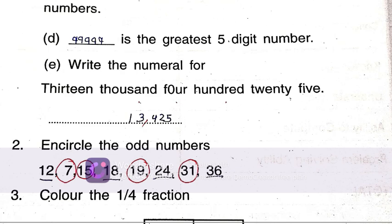99999 is the greatest 5-digit number. You know that greatest number is 9, smallest number is 1. Write the numeral for thirteen thousand four hundred twenty five: 13,425.